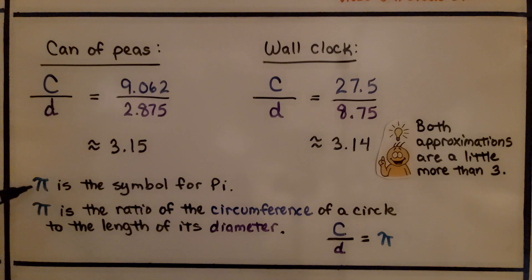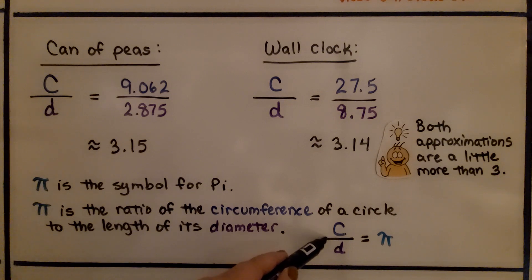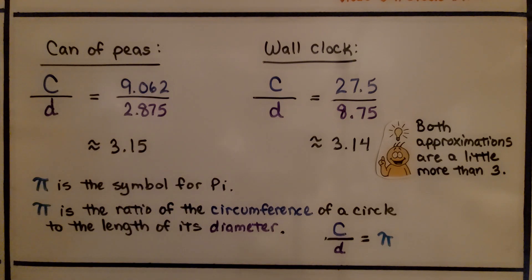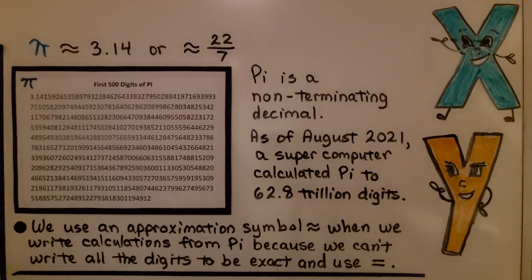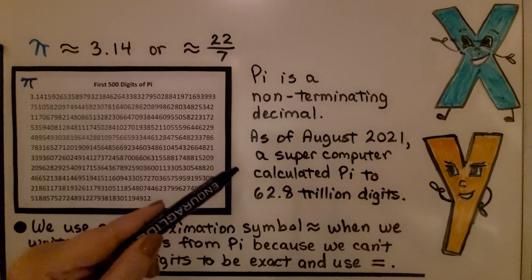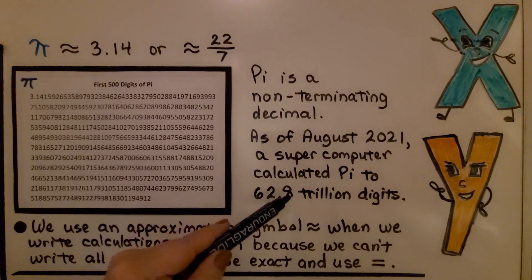This symbol is the symbol for pi. Pi is the ratio of the circumference of a circle to the length of its diameter — C divided by d equals pi. Pi is approximately three point one four, or approximately twenty-two sevenths as a fraction. Pi is a non-terminating decimal. As of August of 2021, a few months before this video was made, a supercomputer calculated pi to sixty-two point eight trillion digits.